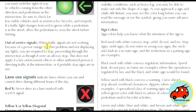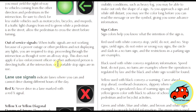Out-of-service signals occur when the power is out — such as a power outage or when a utility company is working on the traffic light. If you see this, you're required to stop and proceed through the intersection as if it were an all-way stop. This does not apply if law enforcement or another authorized person is directing traffic, or if portable stop signs are in use.